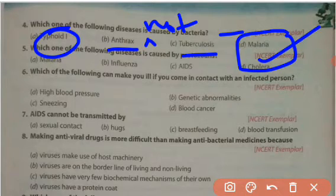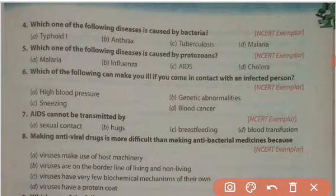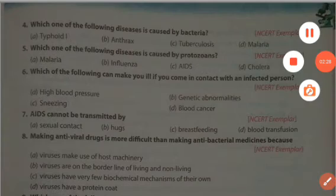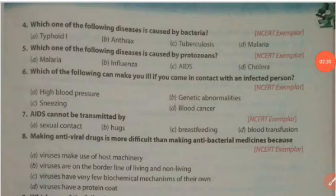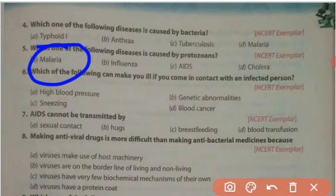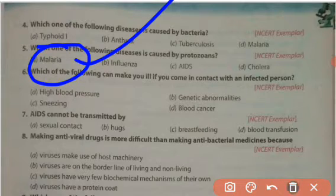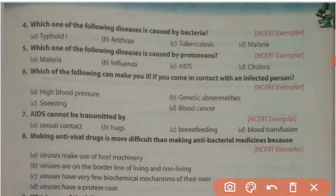The next question is: which one of the following diseases is caused by protozoa? The options are malaria, influenza, AIDS, and cholera. Malaria is a protozoan disease caused by the protozoan known as Plasmodium. So the right answer is malaria.